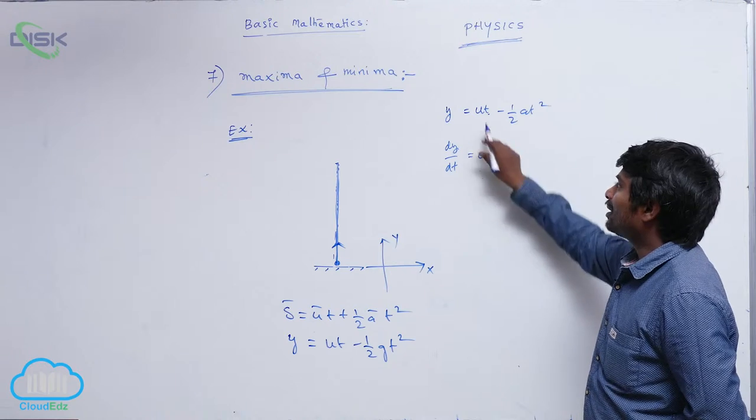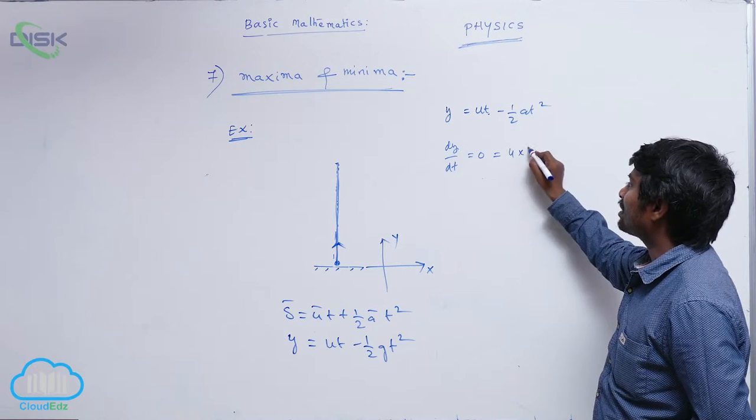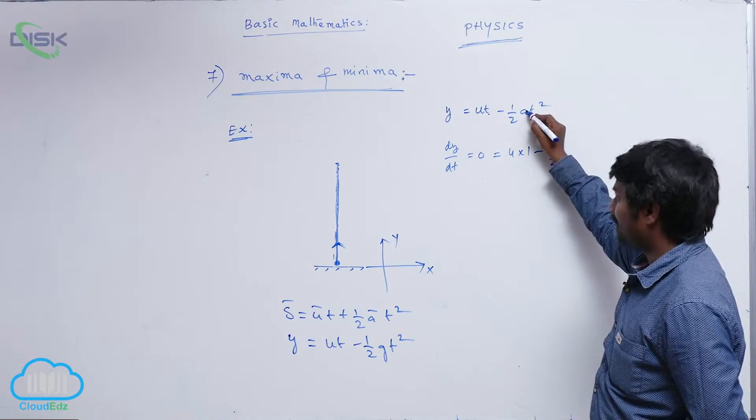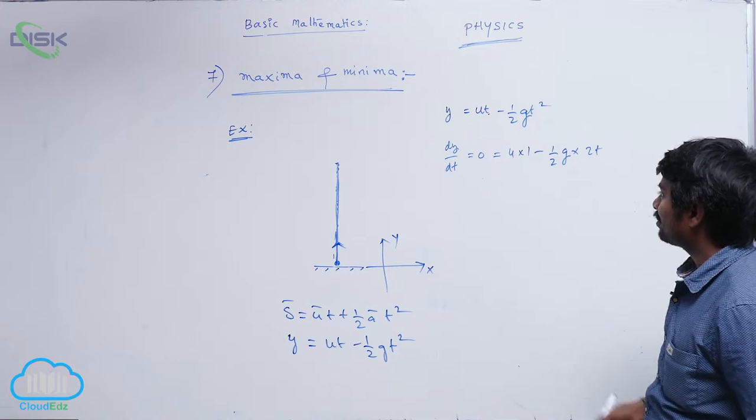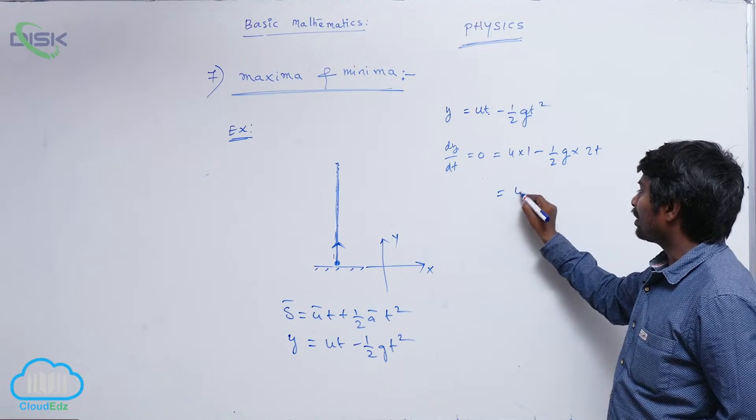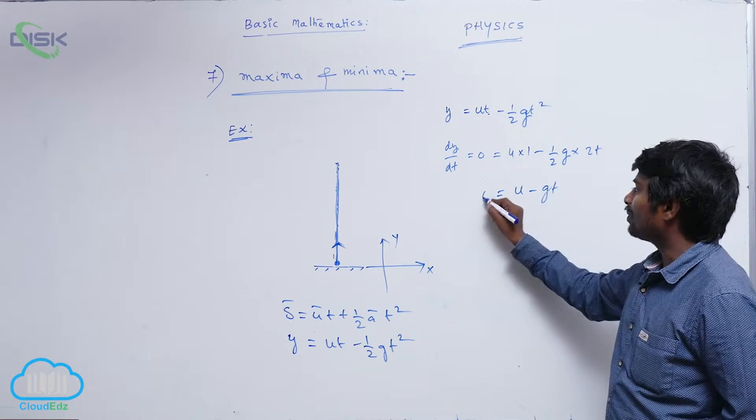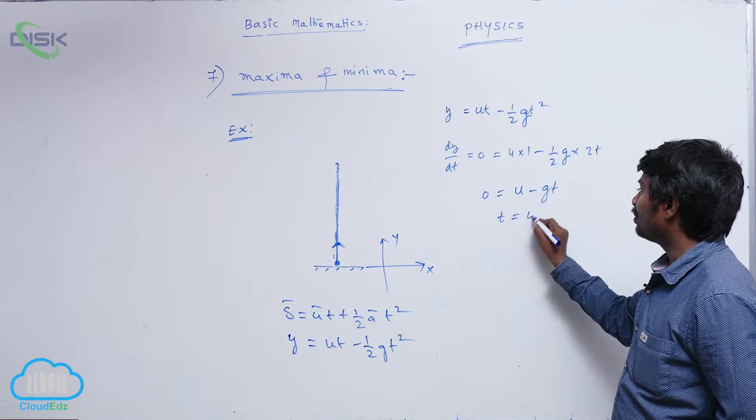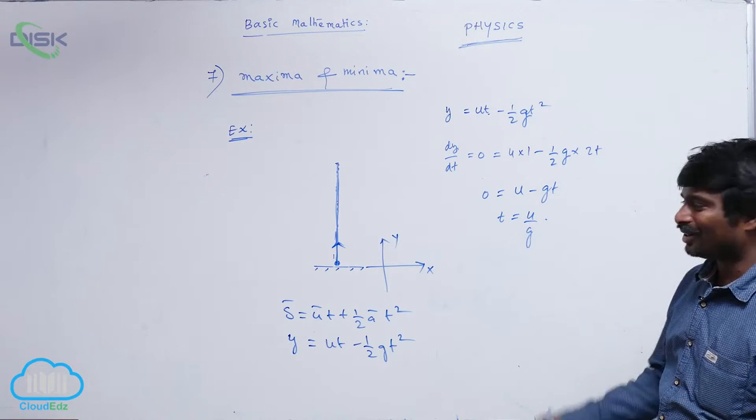Differentiation: u is constant, t differentiation is 1, minus half—g is constant, t² differentiation is 2t. So what you get is u minus gt equals zero. So t equals u by g. We call this time the time of ascent.